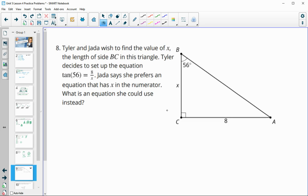Number eight, Tyler and Jada wish to find the value of x in the triangle. Tyler decides to set up the equation, the tangent of 56 equals 8 over x. Jada says she prefers an equation with the x in the numerator or in the top. What equation could she use? So Tyler used the 56 given, opposite is 8 divided by adjacent. So if Jada were to use this angle here, which is going to be 90 minus 56 or 34, Jada could do a tangent function. So tangent of 34 is equal to the opposite, which is x, over the adjacent 8. So she could use that equation instead.